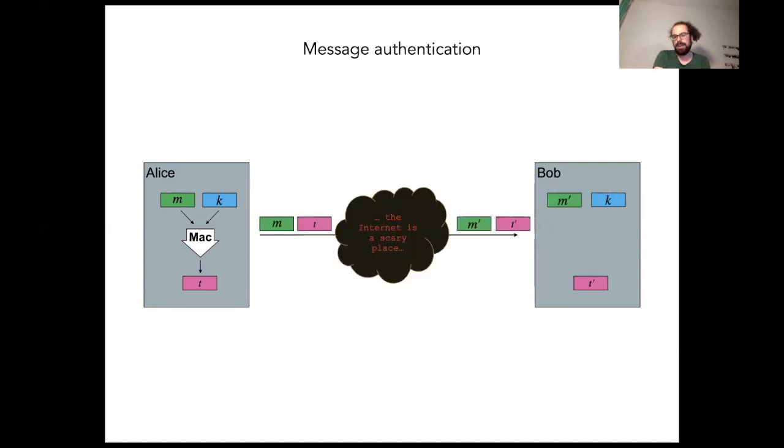Upon receiving a message tag pair, Bob uses the message and his copy of the secret key to recompute the tag. If it doesn't match the one he received, he rejects. Otherwise, he accepts.